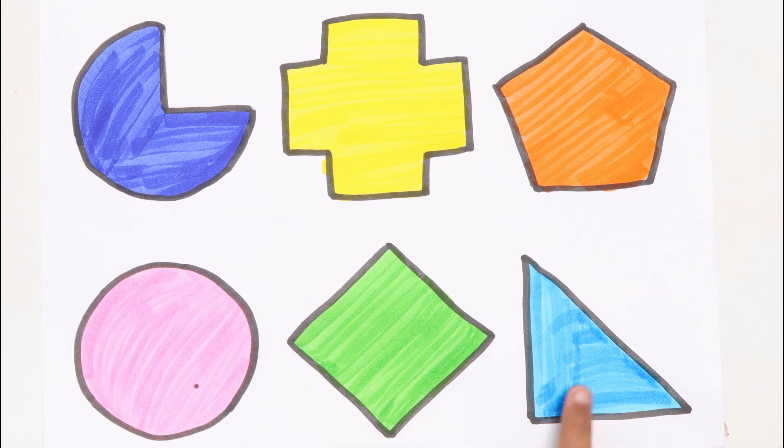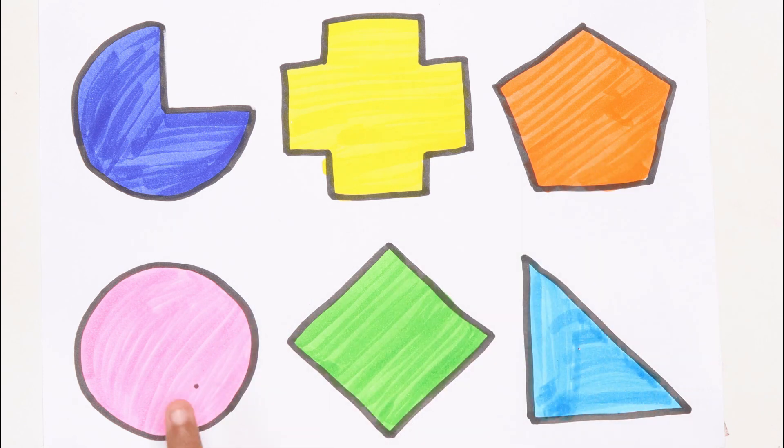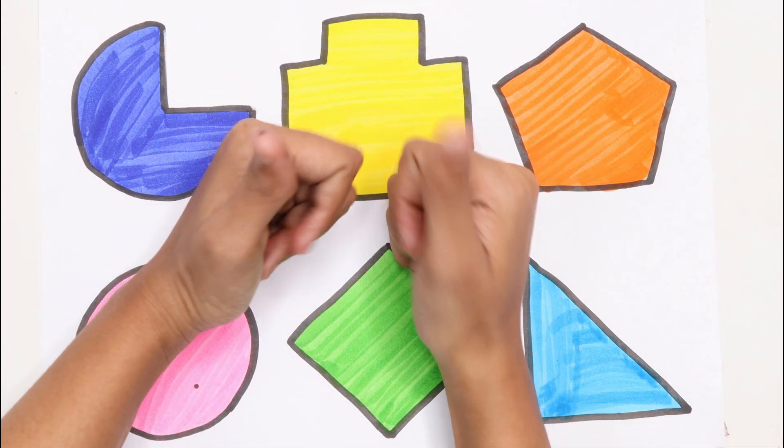Right triangle. Pie. Cross. Pentagon. Circle. Rhombus. Right triangle. Thank you for watching my video. Don't forget to like and subscribe. Bye bye kids.